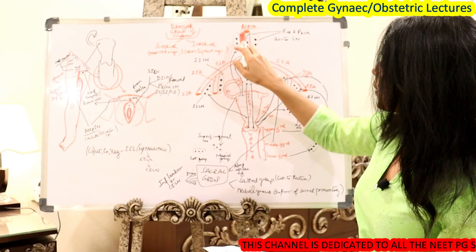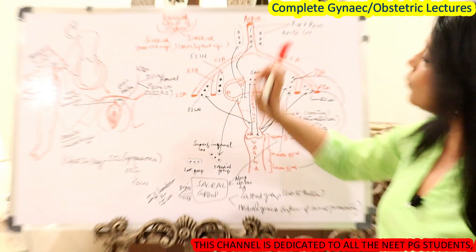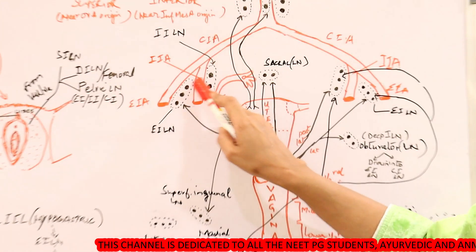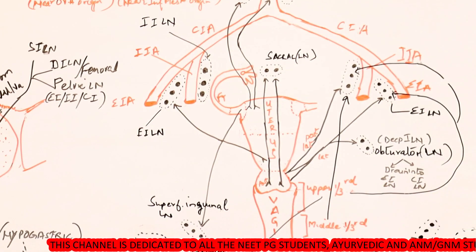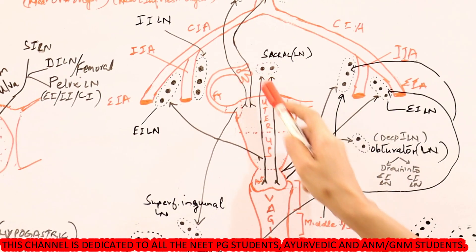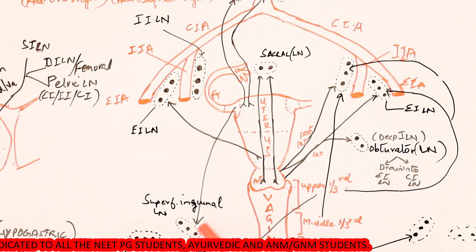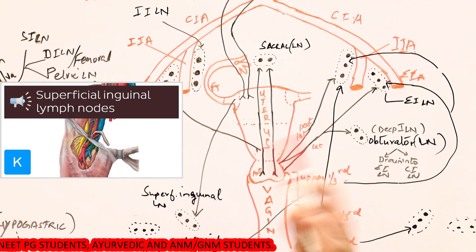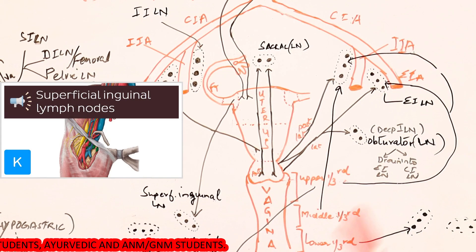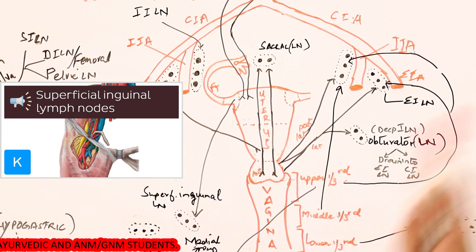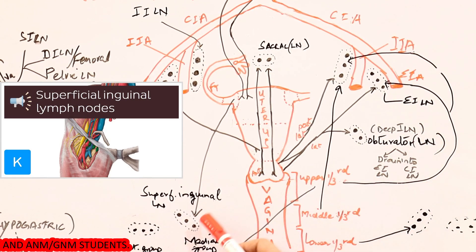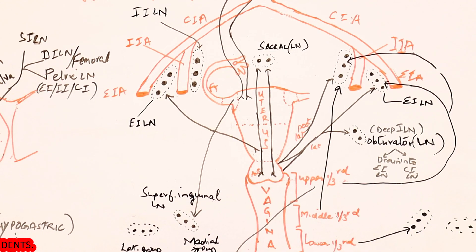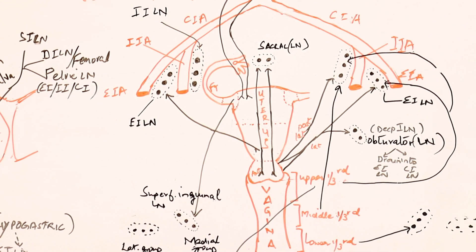So, pre-aortic and para-aortic are the deepest, then comes internal and external iliac, then comes sacral lymph nodes. Then there is another group called superficial inguinal. Inguinal lymph nodes are divided into two groups: superficial and deep.